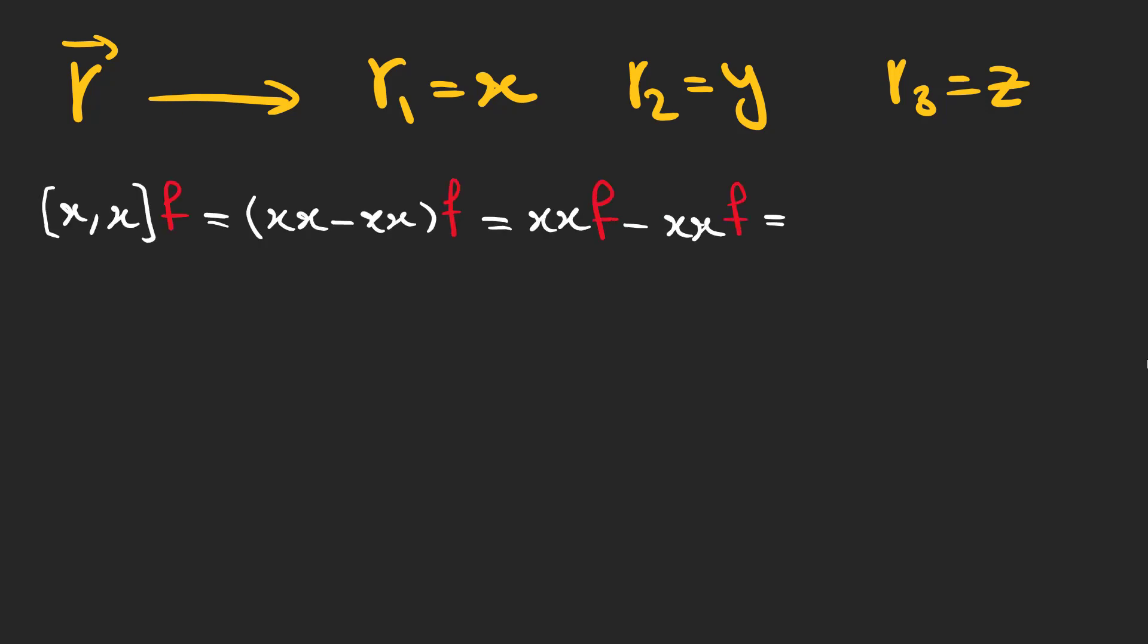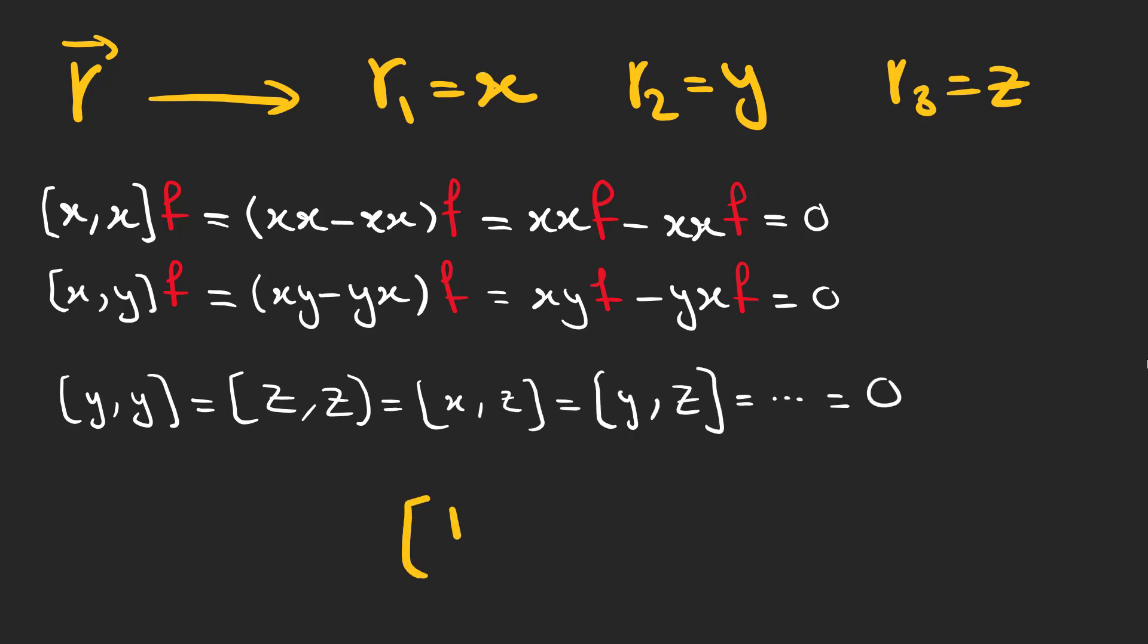The commutator of x with itself is 0, and the commutator of x and y is also 0. Actually, for each two position components, you can check that the commutator is 0.